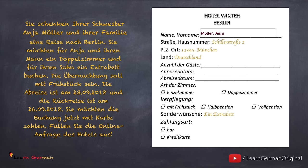Name: Müller, Vorname: Anja, Anzahl der Gäste: 3. Anreisedatum: 23.09.2018, Abreisedatum: 26.09.2018. Art der Zimmer: Doppelzimmer, Verpflegung: mit Frühstück, and Zahlungsart: Kreditkarte.